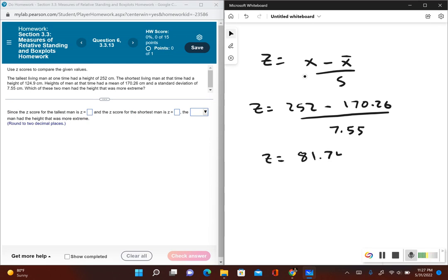That gives me 81.74 divided by 7.55, which is going to be equal to, it says round to two decimal places, so this gives us 10.83. So now what this tells us, since this is a positive value, is the tallest man, his height is 10.83 standard deviations above the mean.